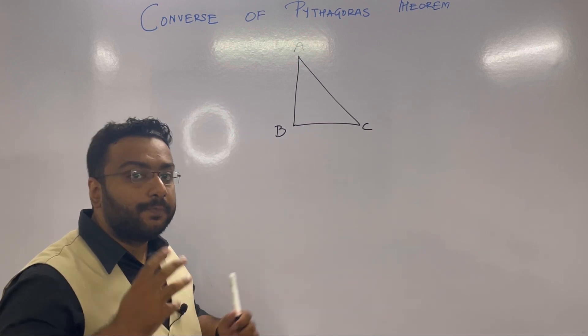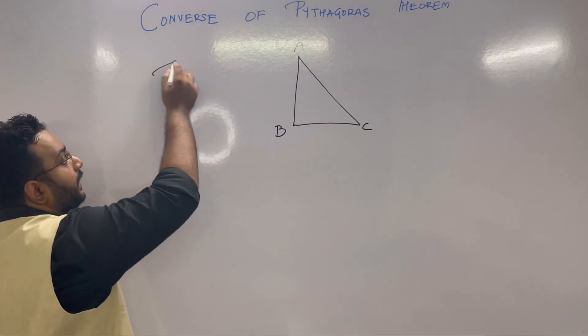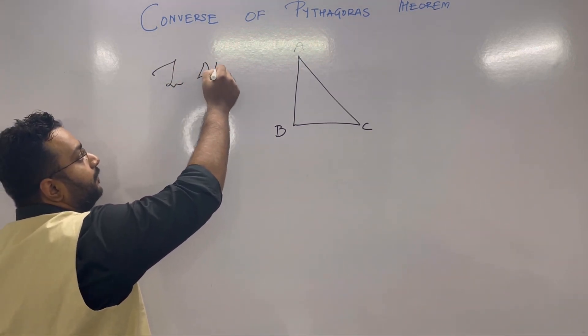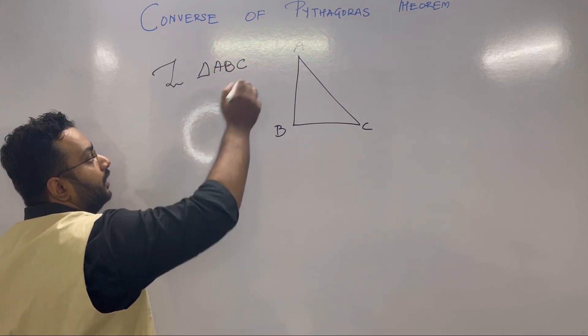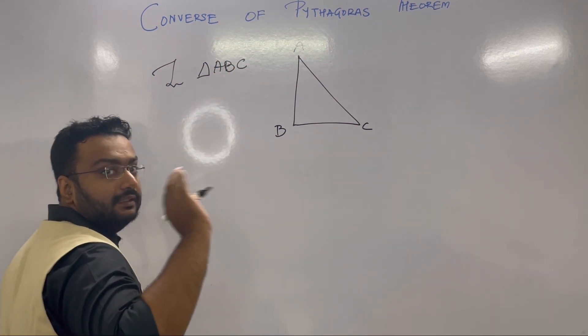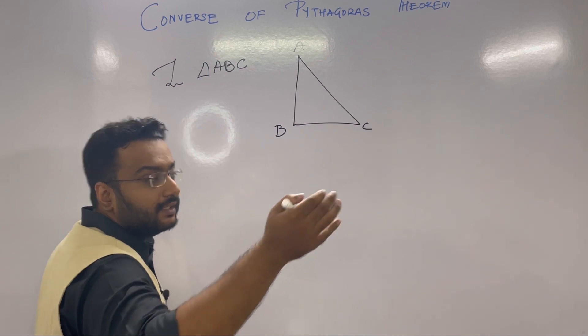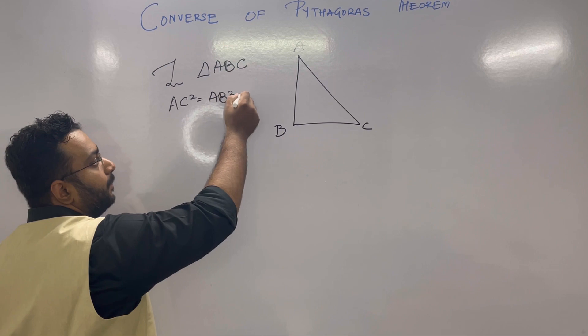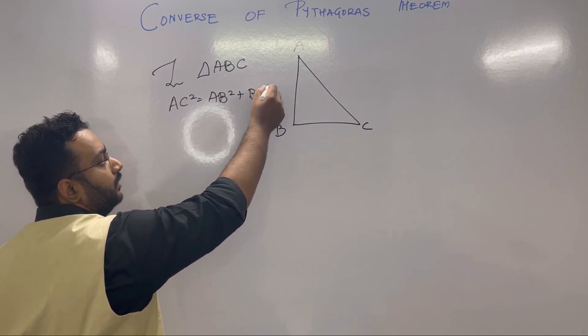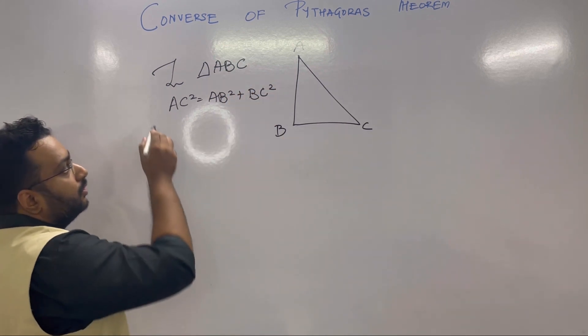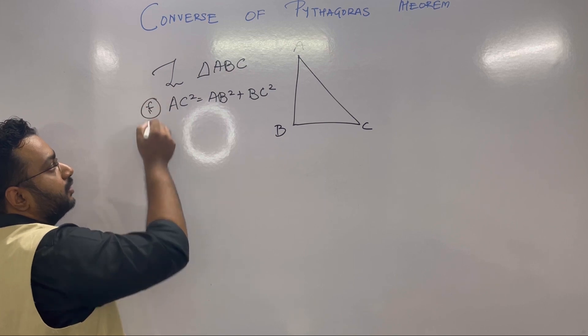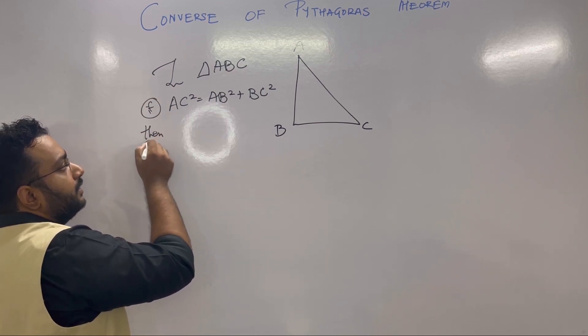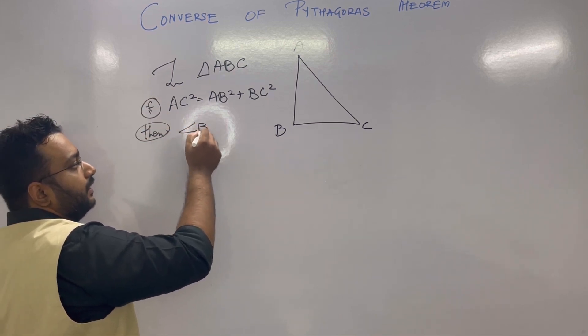So here in triangle ABC, if you observe, the given part is what's stated in Pythagoras theorem: hypotenuse square equals side one square plus side two square. If this is true, then we can say that angle B equals 90 degrees.